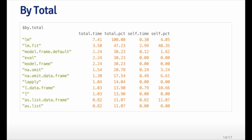Here's an example of some output in the by.total format. You can see clearly at the very top that 100% of the time is spent in the LM function — the total time was 7.41 seconds for this run, and all of it was spent in LM, because LM was the top-level function. The second place was the LM.fit function, where a lot of the computation occurs — that was about three and a half seconds, roughly half the total time. You also see that functions like model.frame, model.frame.default, and eval don't really involve computation, but a reasonable amount of time is still spent within those functions.